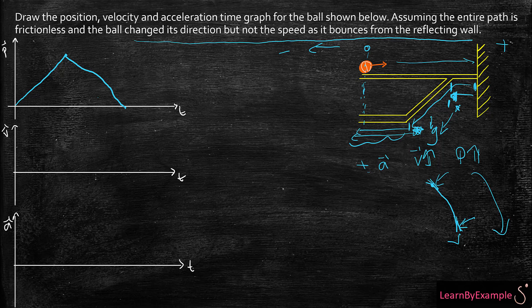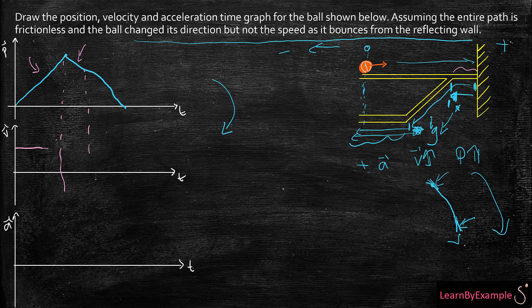Now let's take a look at how we can convert this into a velocity-time graph. A velocity-time graph is the slope of a position-time graph. For the first part, the slope is a constant positive number, so I'm going to have a constant positive velocity. For the second part, the ball is rolling back — it's the same speed but in the negative direction. So from here to here, I'm going to have my velocity at the same value but in the negative direction.